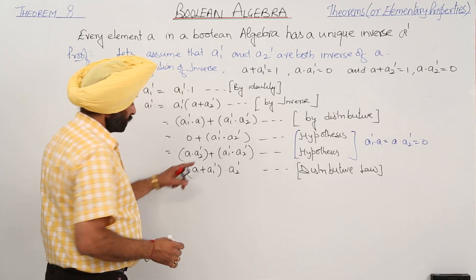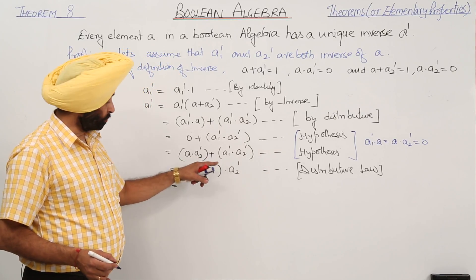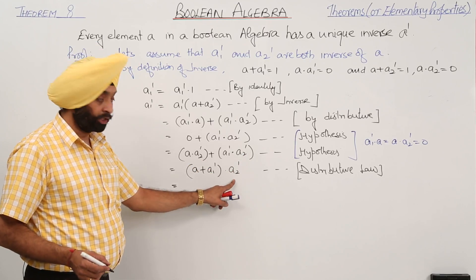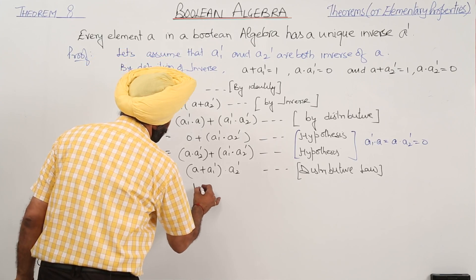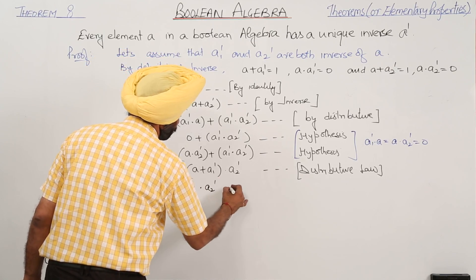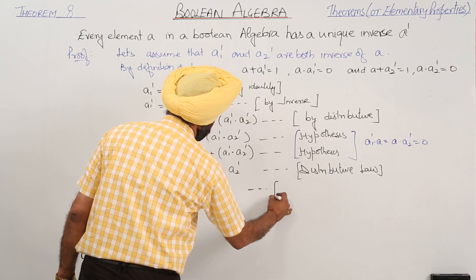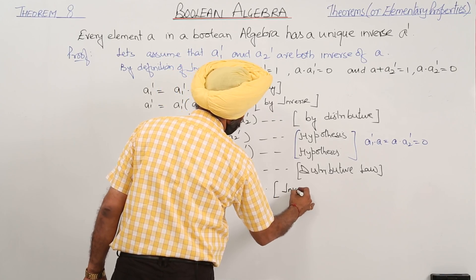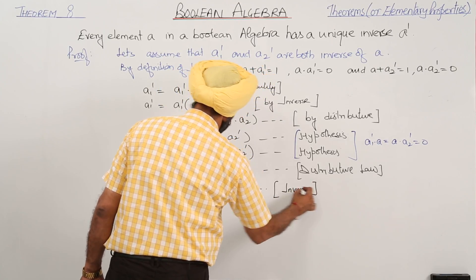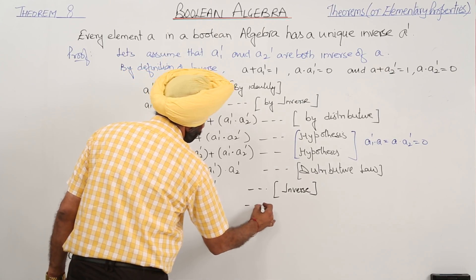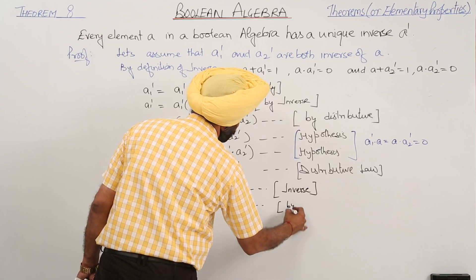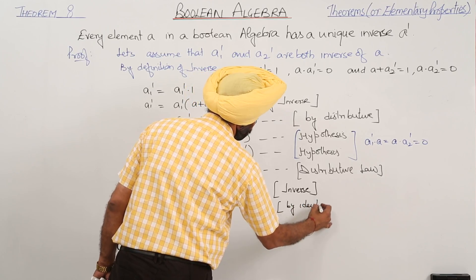Now remember one thing: when you are opening this part you will be having A2 dot A2, that is A2 single times. A dot A is A. Now this becomes 1 dot A2 inverse, and this is A2 inverse by identity.